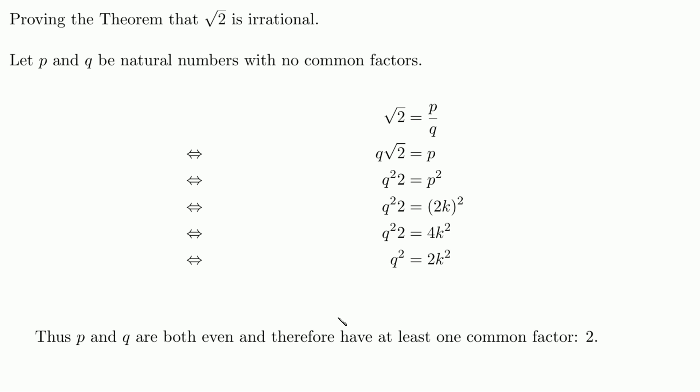But this means then p and q have at least one common factor 2, or there wouldn't be even numbers. But this contradicts our assumption that p and q do not have any common factors. So our theorem is proven.